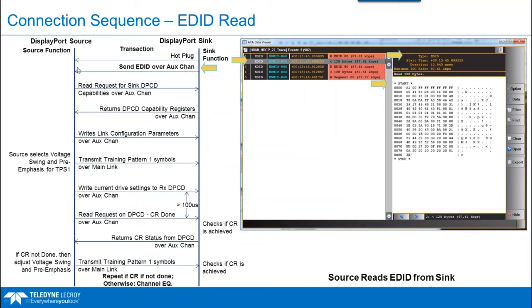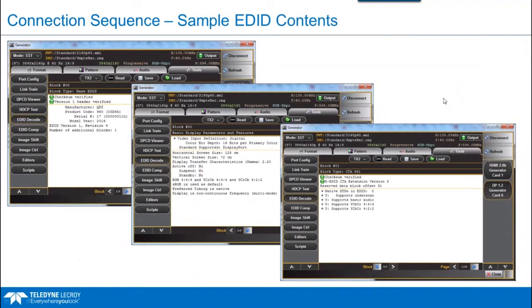Now we'll go through the DisplayPort connection sequence in detail using a ladder diagram. The source and sink functions are on either side, with transactions in the middle. The first thing that happens is the hot plug, then the EDID is read by the source. Here's an example of an EDID decode of the VESA block — any transaction highlighted is shown in the decoded view.